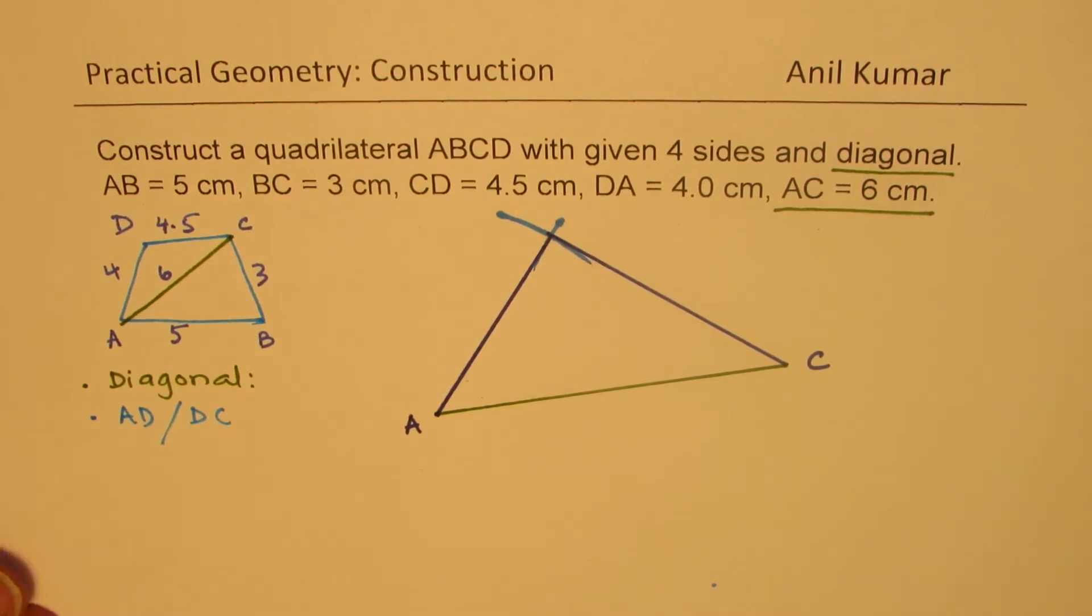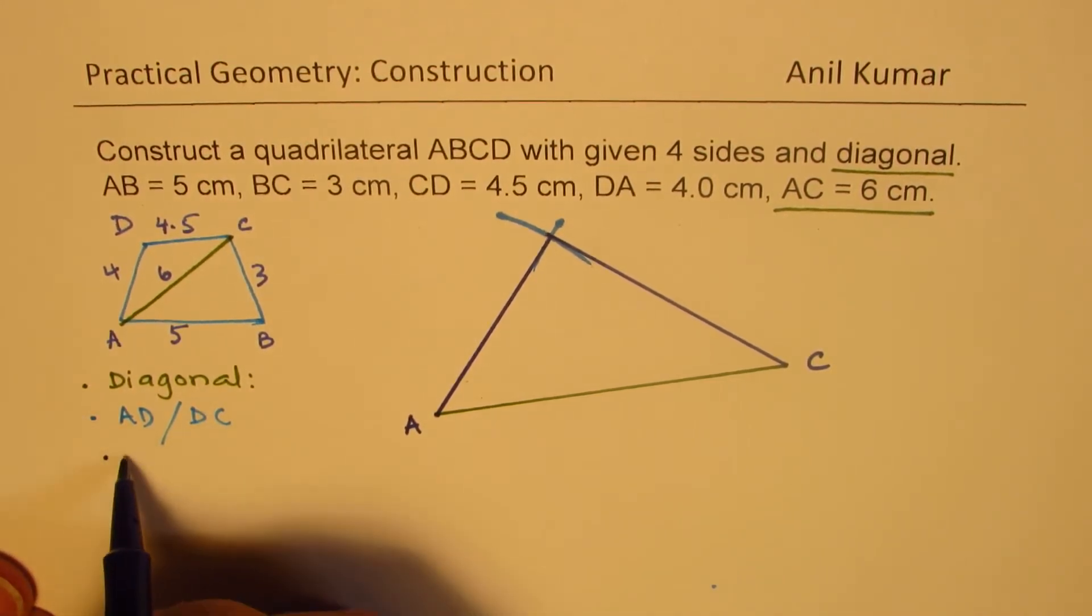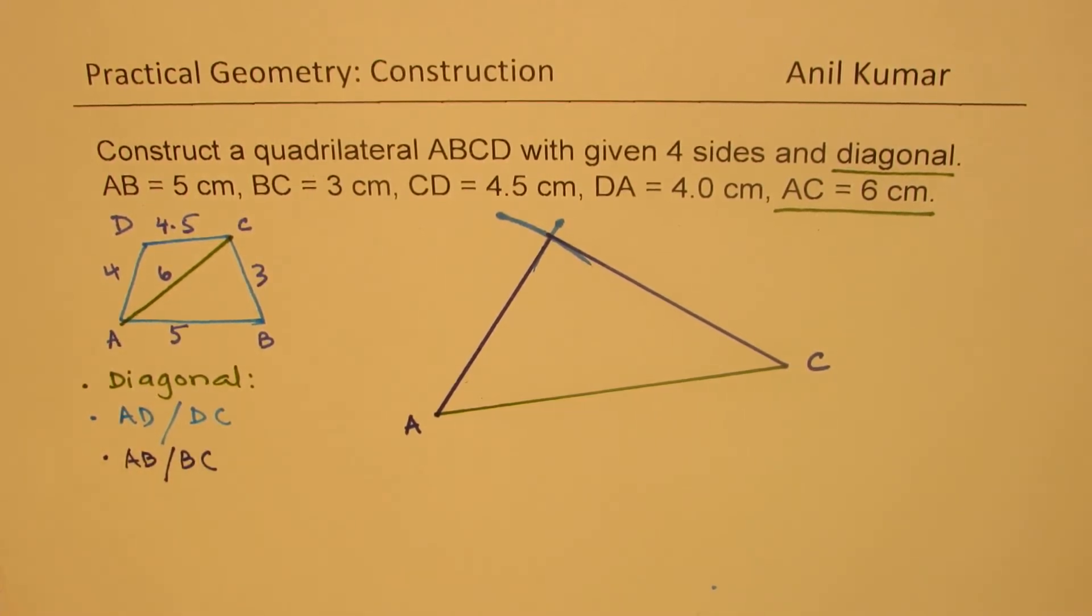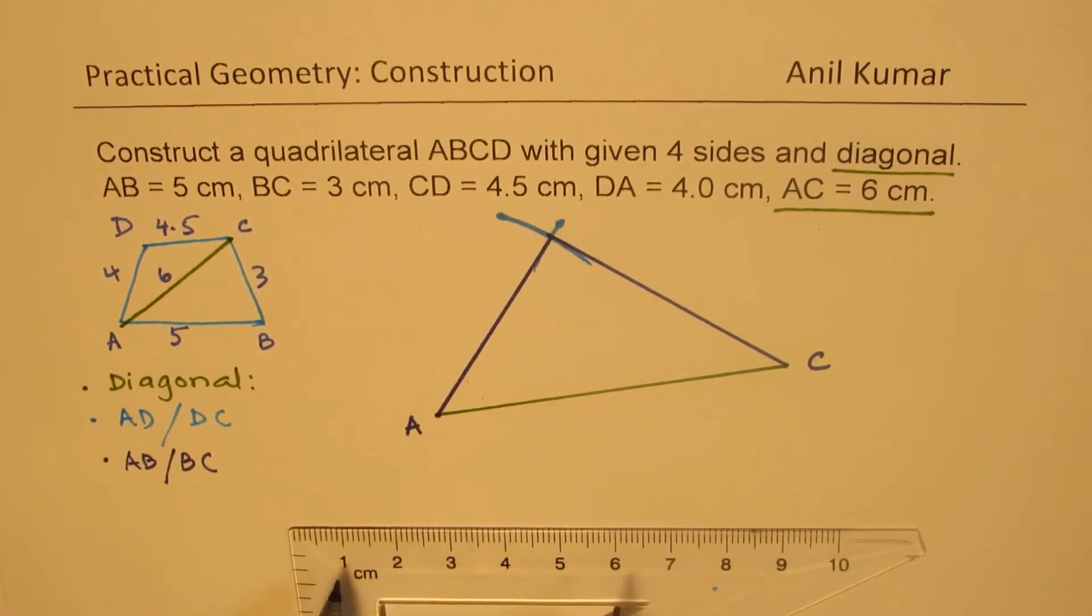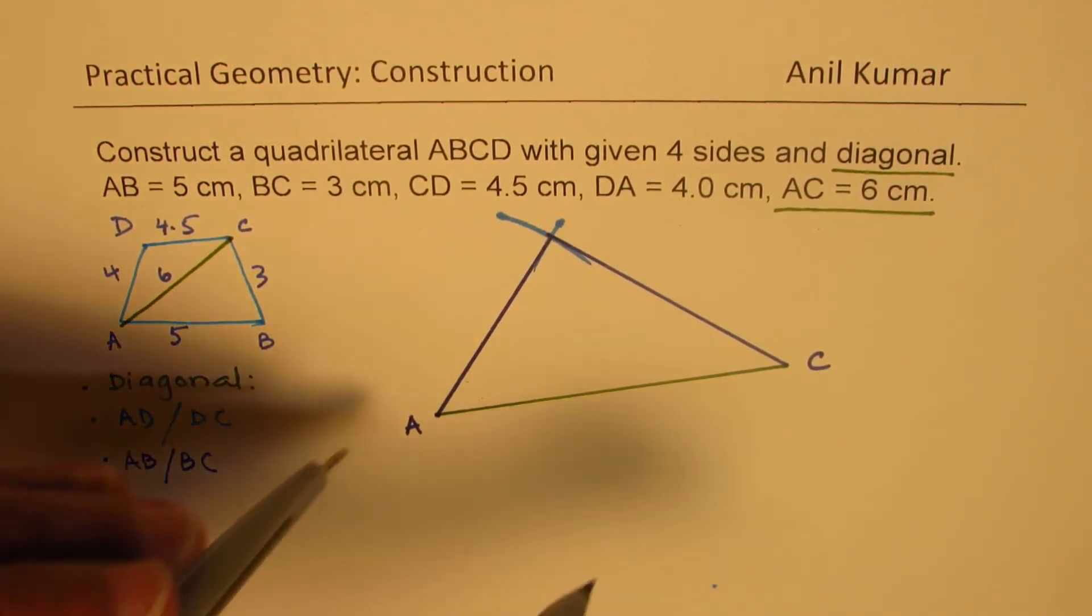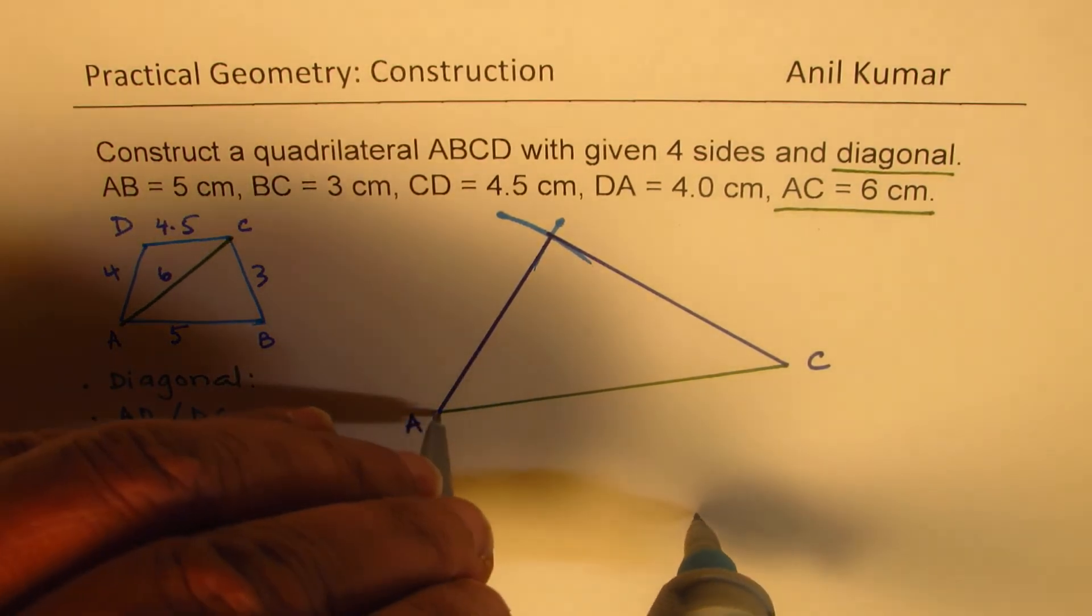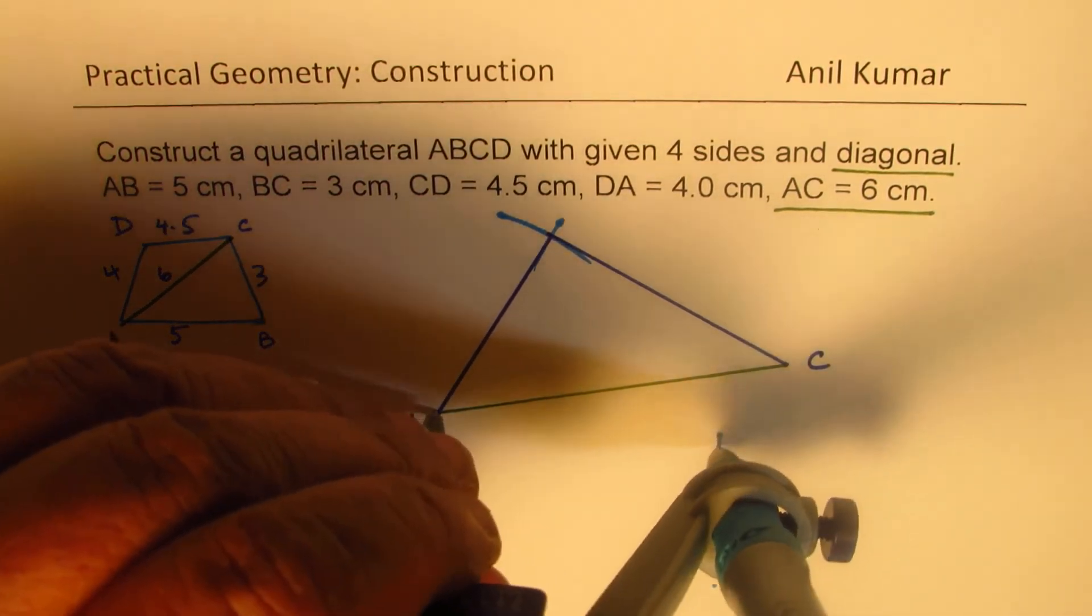Now let's construct the other two sides which is AB with intersection of BC. So that is 5 centimeters and 3 centimeters. Let's again open our compass to 5 centimeters. Note I'm not using zero because in this scale zero is not well defined, so I'm doing 1 to 6. 1 to 6 will be 5 centimeters as you can see. So 5 centimeters is A to B. I have to place my compass at A and then go 5 centimeters.